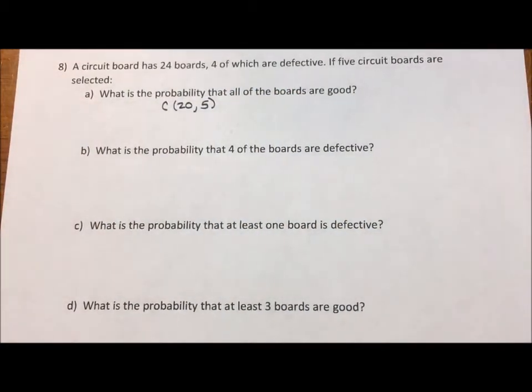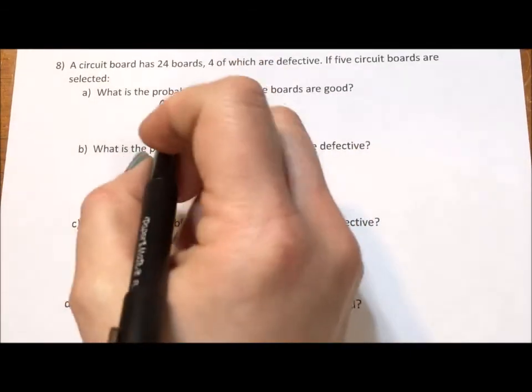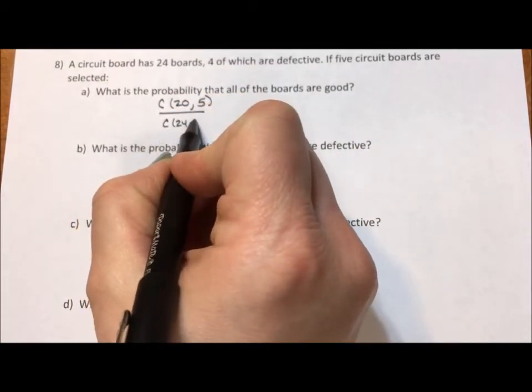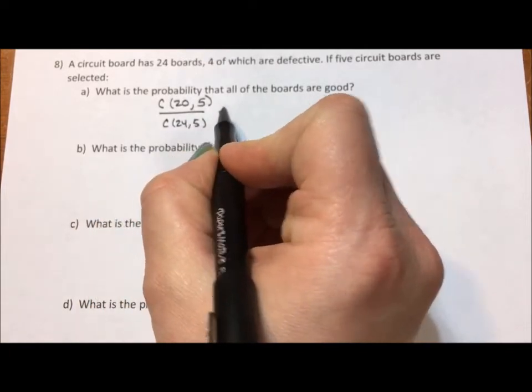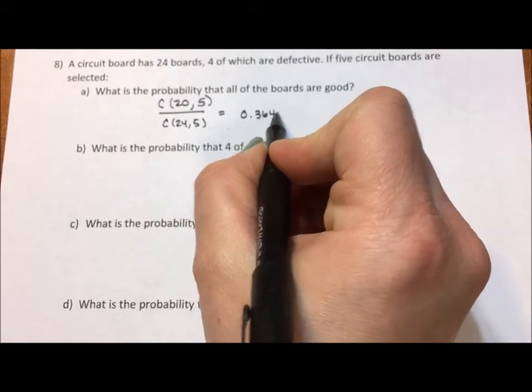So we want the combination of the 20 good boards taken five at a time. That's going to be the number of ways we can get these good boards. And then we're going to divide by the total, which is a combination of all 24 boards taken five at a time. And if we divide this out, we have the probability of 0.3648.